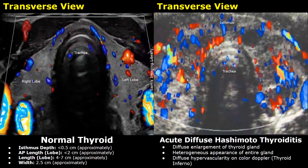This is a normal thyroid image with color Doppler applied. In normal cases, we will not see any significant vascularity within the thyroid — only a few Doppler signals are seen. In Hashimoto thyroiditis in acute stages, we will find diffuse hypervascularity on color Doppler.